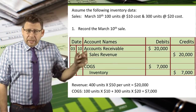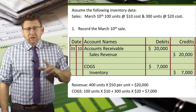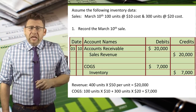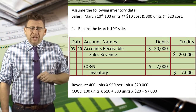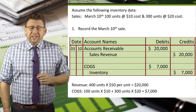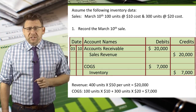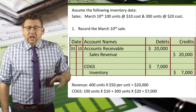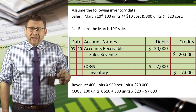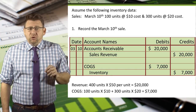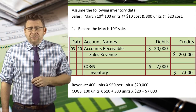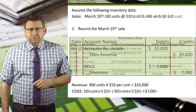So we debit accounts receivable — let's assume they were sold on account — and credit sales revenue for $20,000, the retail price of the goods. We also debit cost of goods sold and credit inventory for the cost of the inventory sold, which was $7,000.